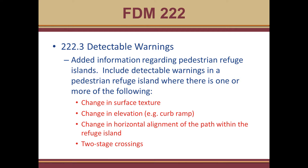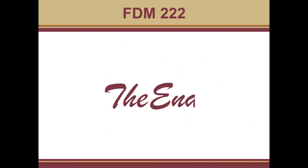Sometimes refuge islands are designed to jog so that there's some storage space if we anticipate large groups of pedestrians crossing at a time. Detectable warnings are also required when there's a two-stage crossing, meaning the signal would only allow pedestrians to make it partway across the street at a time. That's a summary of the changes in chapter 222, Pedestrian Facilities, from the 2020 FDM to the 2021 FDM. Thank you.